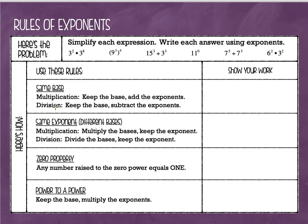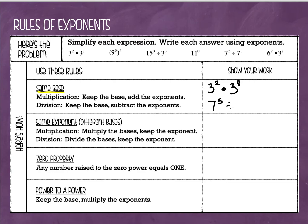The first rule is when we are multiplying or dividing expressions that have the same base. Remember, the base is the large number and the exponent is the little number. Looking at this first example, I have three squared times three to the eighth — they both have the same base. I'm also going to copy down seven to the fifth power divided by seven to the third power.